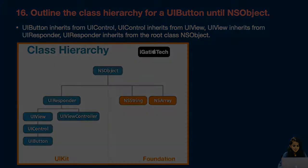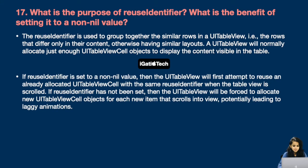Next question: What is the purpose of reuse identifier? What is the benefit of setting it to a non-nil value? The reuse identifier is used to group together similar rows in a UITableView — rows that differ only in their content but otherwise have similar layouts. A UITableView will normally allocate just enough UITableViewCell objects to display the content visible in the table.